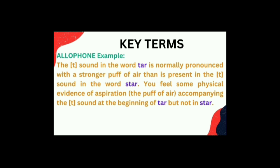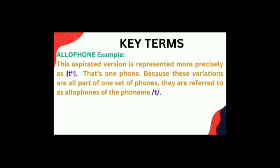For example, the /t/ sound in the word 'top' is normally pronounced with a stronger puff of air than the /t/ sound in the word 'star'. If you put your hand in front of your mouth and pronounce 'top', you do feel that puff of air coming out — physical evidence of aspiration. This aspirated version is represented more precisely as /t/ with a smaller h. Because these variations are all part of one set of phones, they are referred to as allophones of the phoneme /t/.